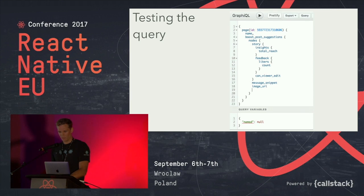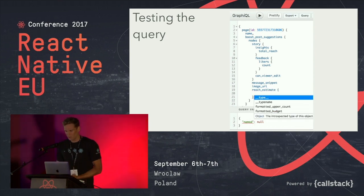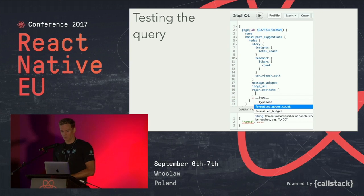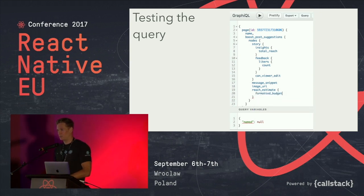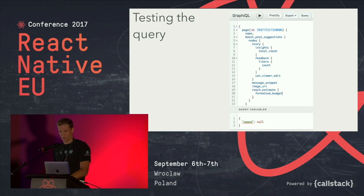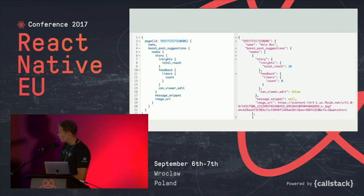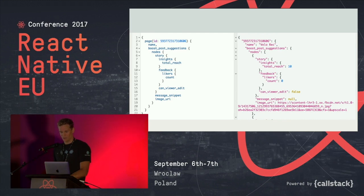You define the query — for example, the page name, boost post suggestions, and on each post the number of likes and the image. To verify the query works there's a tool called GraphiQL, a web tool where you can paste your query and run it live with code completion in the browser. I was also adding new fields on the server side in PHP, and you can test those changes immediately. It lets you iterate very quickly.